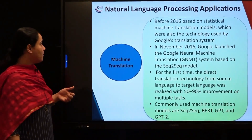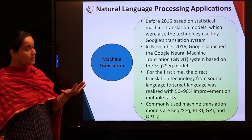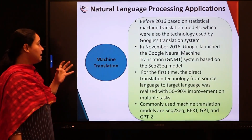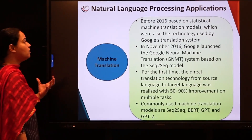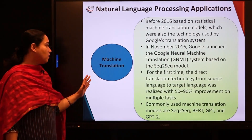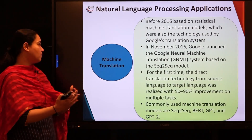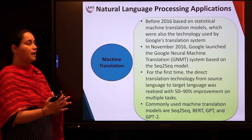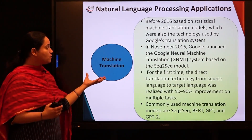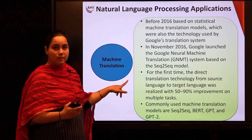Next is NLP — Natural Language Processing applications. The first subcategory is machine translation. Before 2016, statistical machine translation models were used, including Google's translation system. In November 2016, Google launched Google Neural Machine Translation based on a sequence-to-sequence model, achieving direct translation from source to target language with an improvement of 50 to 90 percent. Common algorithms include Sequence-to-Sequence, BERT, GPT, and GPT-2.